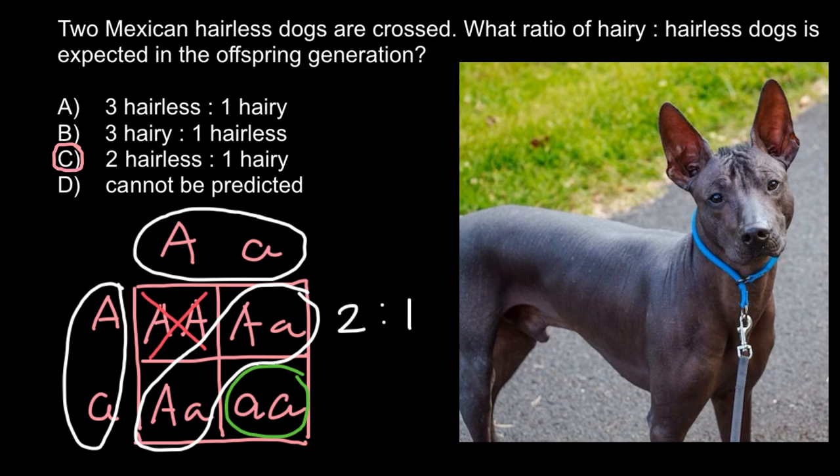The correct answer is answer C: two hairless to one hairy. I recommend you memorize this example, because there are not many examples of a dominant trait caused by an allele that is also lethal in the homozygous form. You may encounter this on your exam, so be prepared.